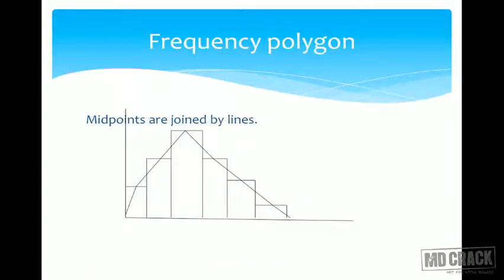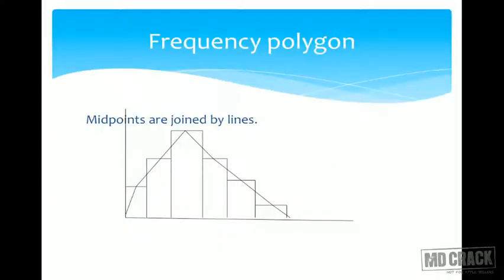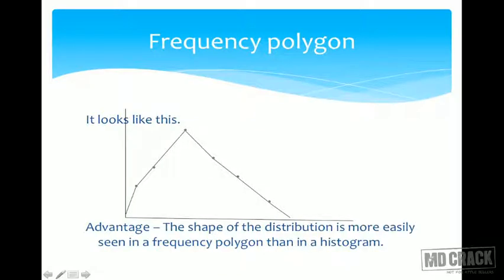A frequency polygon is made by joining the midpoints of histogram bars with straight lines, not curves. The difference between a frequency curve and a frequency polygon: a curve has no angles, while a frequency polygon shows sharp angulations at the joining points. An important advantage of the frequency polygon is that the shape of the distribution is more easily seen than in a histogram.